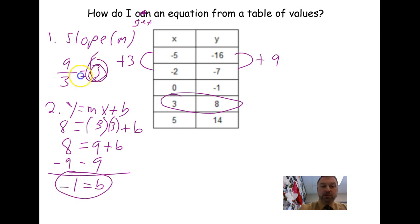So if this is my slope, and that's my y-intercept, then my equation is y equals 3x minus 1.